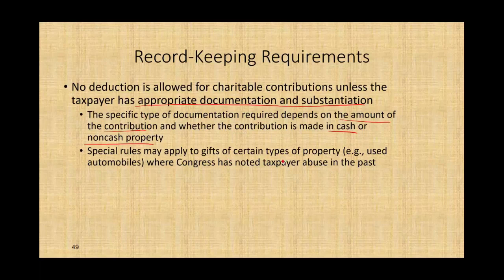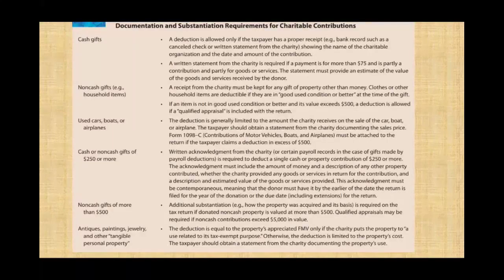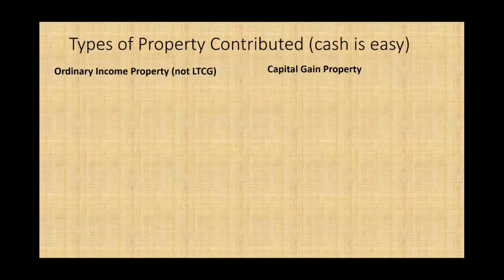Special rules may apply to gifts of certain types of property — for example, used automobiles, where Congress has noted taxpayer abuse in the past. For cash gifts, a deduction is allowed if the taxpayer has a proper receipt, bank record such as a canceled check, or written statement from the charity. A written statement from the charity is required if the payment is more than $70.